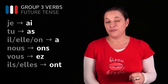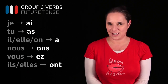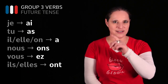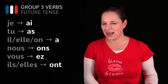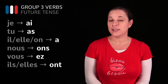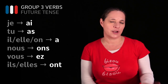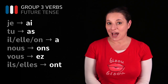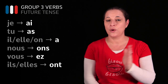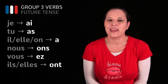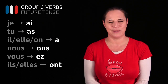You will notice that if you know how to conjugate the verb AVOIR in the present tense, it is really similar to that: J'AI, TU AS, IL A, ELLE A, ON A, NOUS AVONS, VOUS AVEZ, ILS ONT. So that could be a trick for you to try to remember how to use these future tense endings when you want to conjugate any group verbs in the future tense.